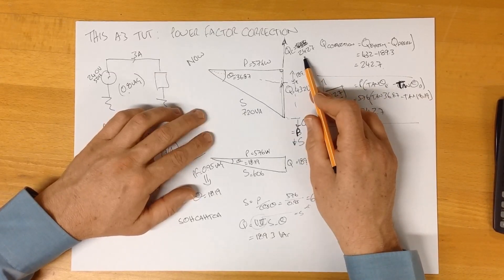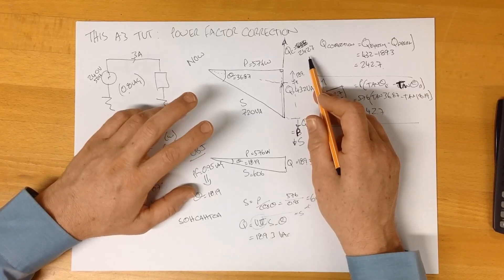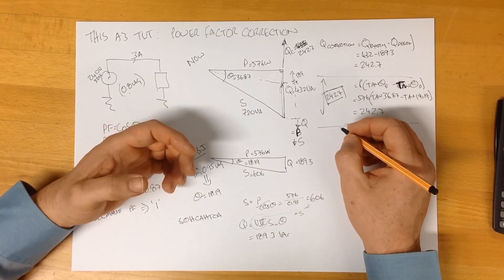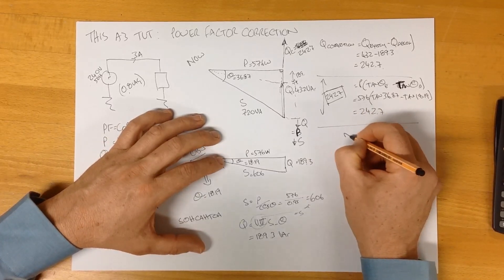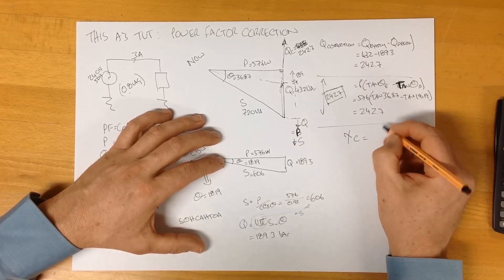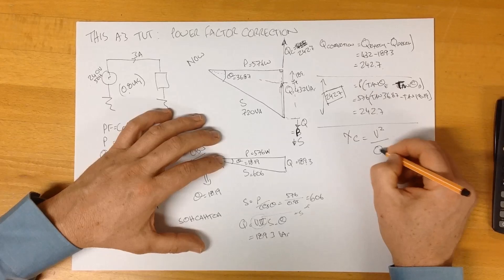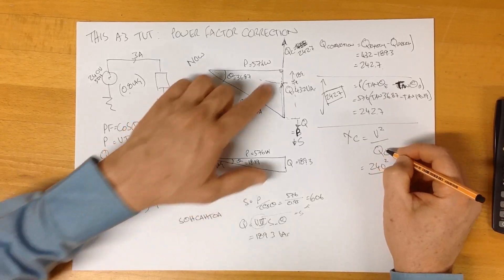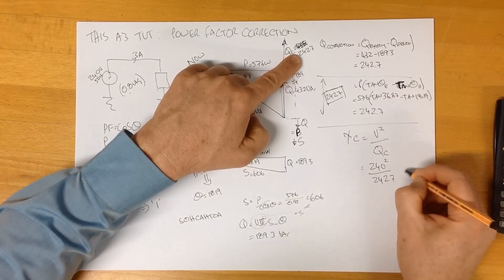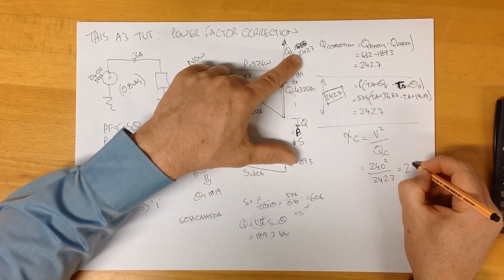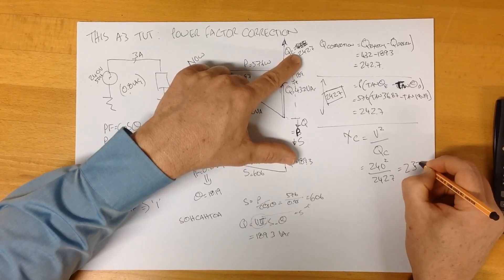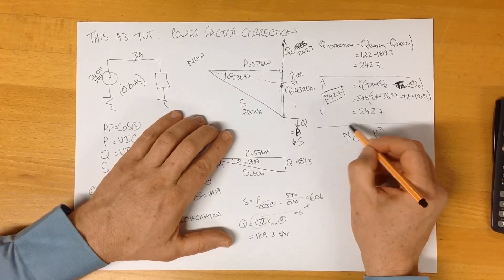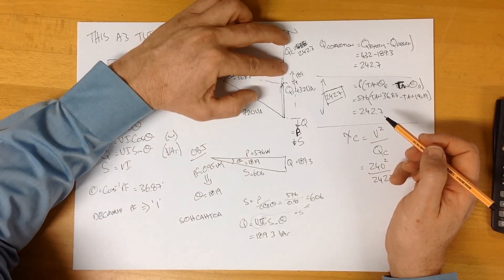How do we add in 242 capacitive VARs? We need to add in some capacitance. So, the question is, how much capacitance? And there's one equation that kind of helps us jump along a little bit here. It says the amount of capacitive reactance we will need is the square of the voltage over the capacitive VARs we're after. So, that's 240 squared divided by 242.7, and that gives us a solution of 237.35 ohms. So, we now know how much capacitive reactance we need to give us this to end up with that.